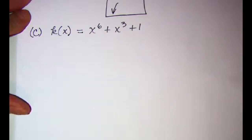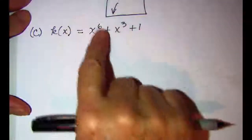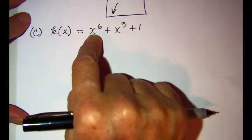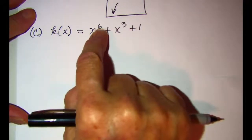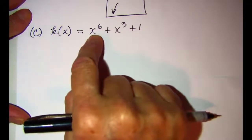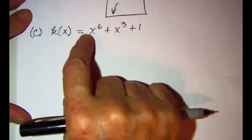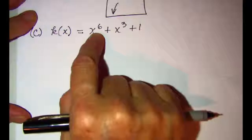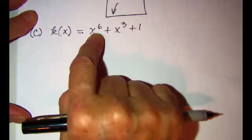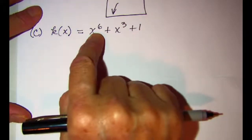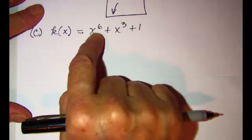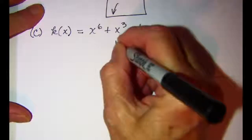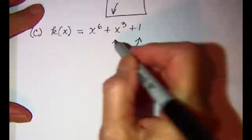On this last example, our dominant term is x to the sixth power. The exponent is an even number and the lead coefficient is a positive one. Whenever the exponent is even, both arms will be pointing in the same direction. So the end behavior for this graph is going to be both arms up.